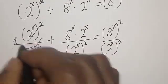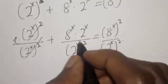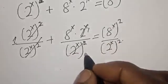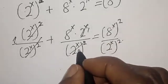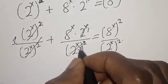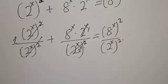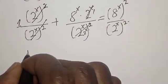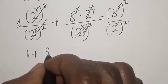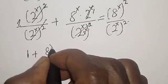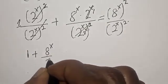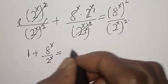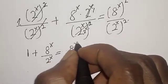That is 1. Then 2 raised to power here is 1. We cancel this. You have 2 raised to power s. 1 plus 8 raised to power s over 2 raised to power s is equal to 8 raised to power s over 2 raised to power s, all squared.